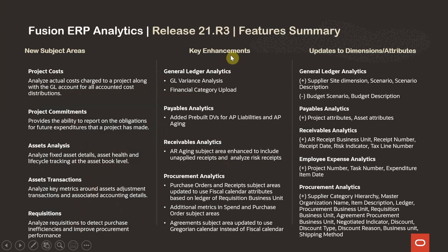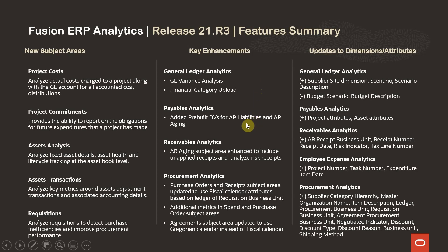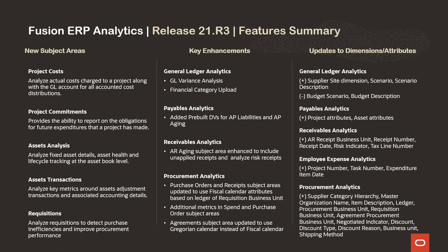Let's look at the key enhancements quickly. In general ledger analytics we have enhanced the AGL profitability and balance sheet subject area to do variance analysis. We've provided the capability to upload financial categories independent of Fusion ERP Cloud. In payables analytics we have added two pre-built DVs, one for AP liabilities and another for AP aging. In receivables analytics we enhanced the AR aging subject area to include unapplied receipts and also analyze risk receipts. In procurement analytics we updated purchase order and receipt subject area to use fiscal calendar attributes based on ledger of requisition business unit. We added some metrics to spend and purchase orders subject area. Also, agreement subject area has been updated to use Gregorian calendar instead of fiscal calendar.